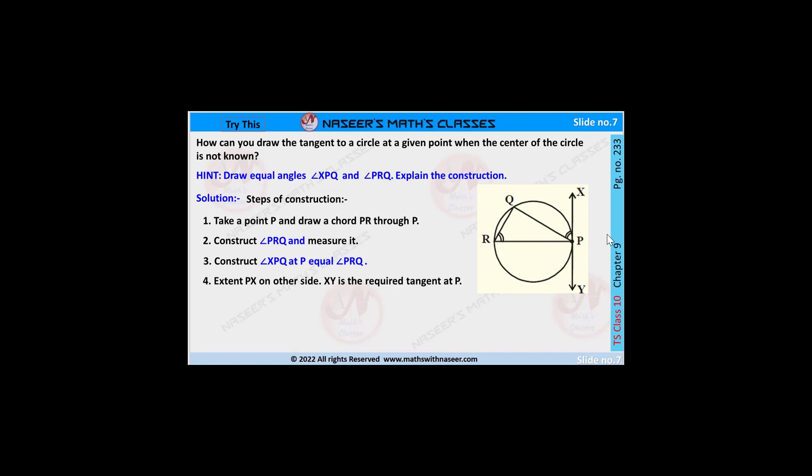In the figure, given a circle and P is a point on the circle, draw a chord PR and construct angle PRQ and measure that angle. Next, construct angle XPQ which is equal to angle PRQ. Extend PX on the other side. We get XY is the required tangent at point P.